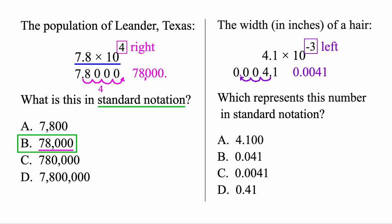0.0041. And let's go ahead and rewrite it again. So that's how many inches the width of this hair was. Therefore, this number is the standard notation or the normal way, and that's the correct option here. So that's the key. When you have a positive number, you'll move the decimal to the right. A negative number, move the decimal to the left there.